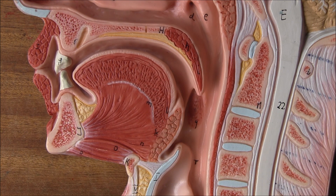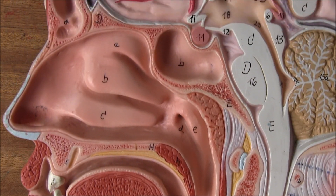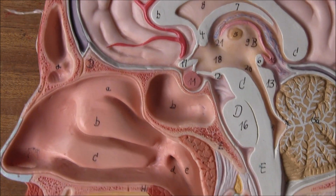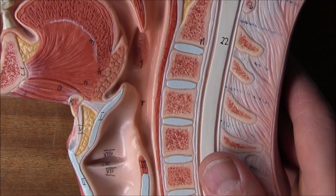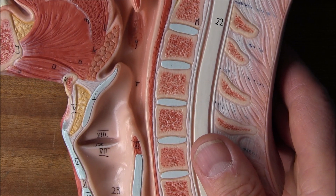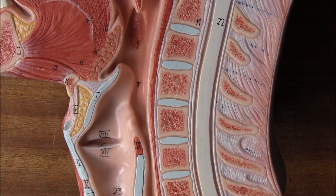Children have a proportionately large head compared to the rest of their body and also a proportionately short neck. Combined with the large head, this tends to cause neck flexion — the head is moved forward. This can make airway control difficult when the level of consciousness is reduced.